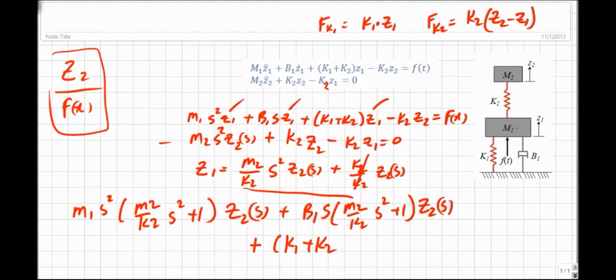K1 plus K2. Well, these videos are just so much fun. I mean, what could be more fun? I'm sure you guys are just looking forward to these. M2 over K2 S squared plus one. That's just that quick substitution times, as you expect, Z2 of S minus K2 Z2 of S equals F of S.